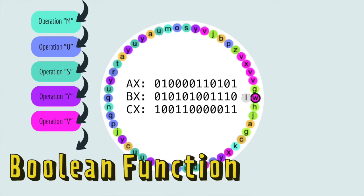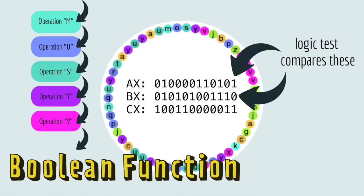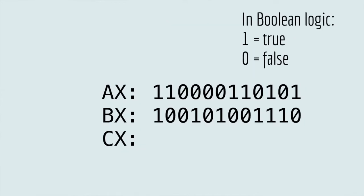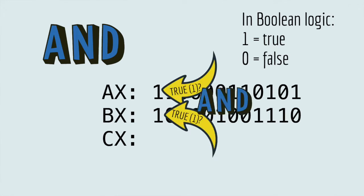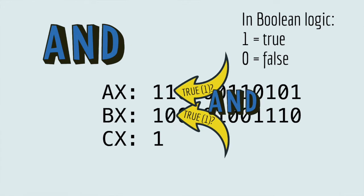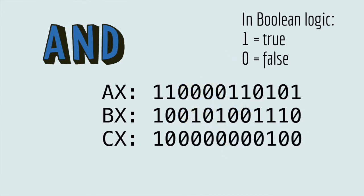Boolean functions are logic tests that compare two binary strings, and the result of the test is stored as a new binary string. In Boolean logic, one is true and zero is false. For example, the Boolean function AND tests if the value is true for one bit AND true for the other one as well. If the first bit AND the second bit are both true, it outputs true. But if either one of the bits is false, it returns a value of false — and it does this for every bit in the string.